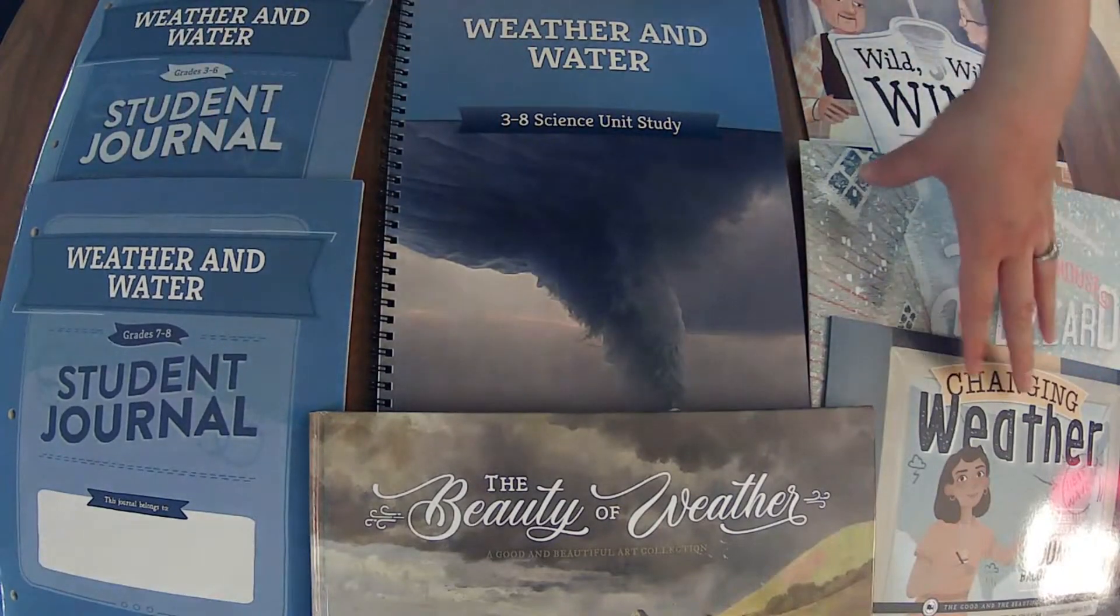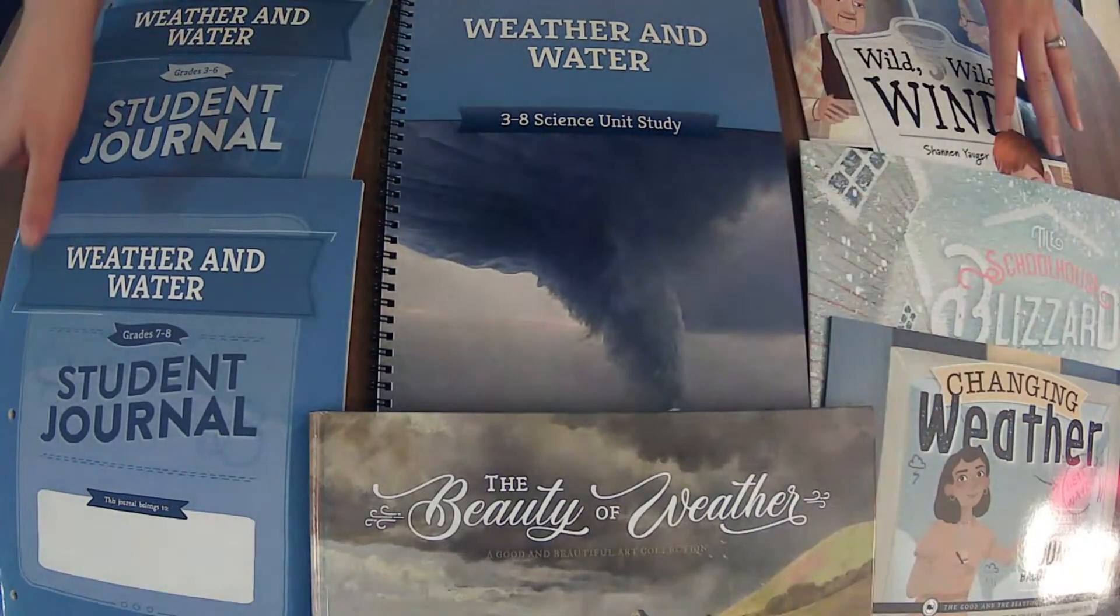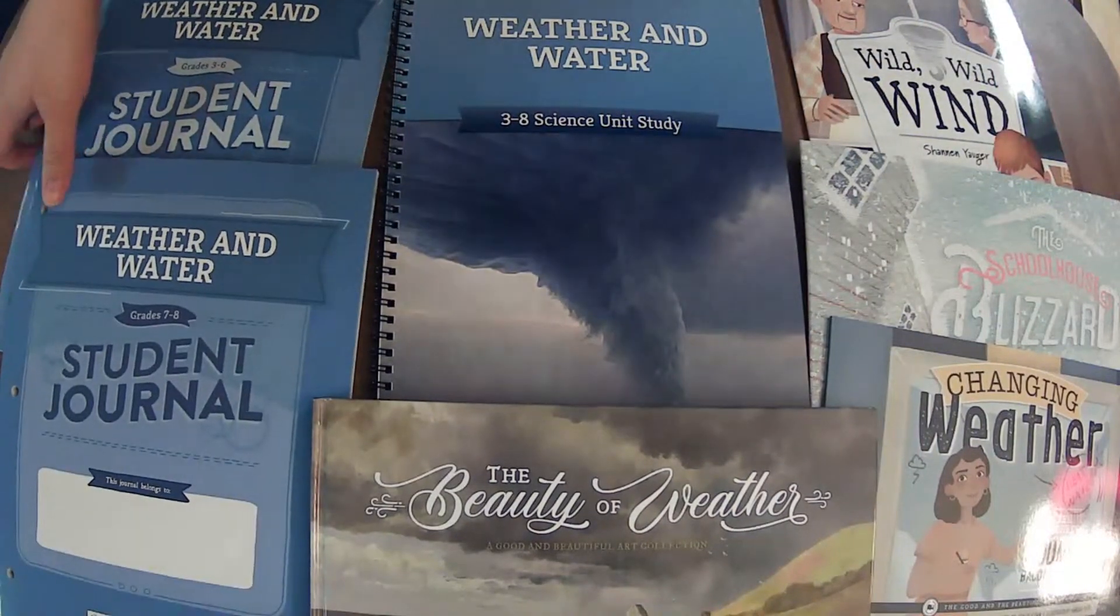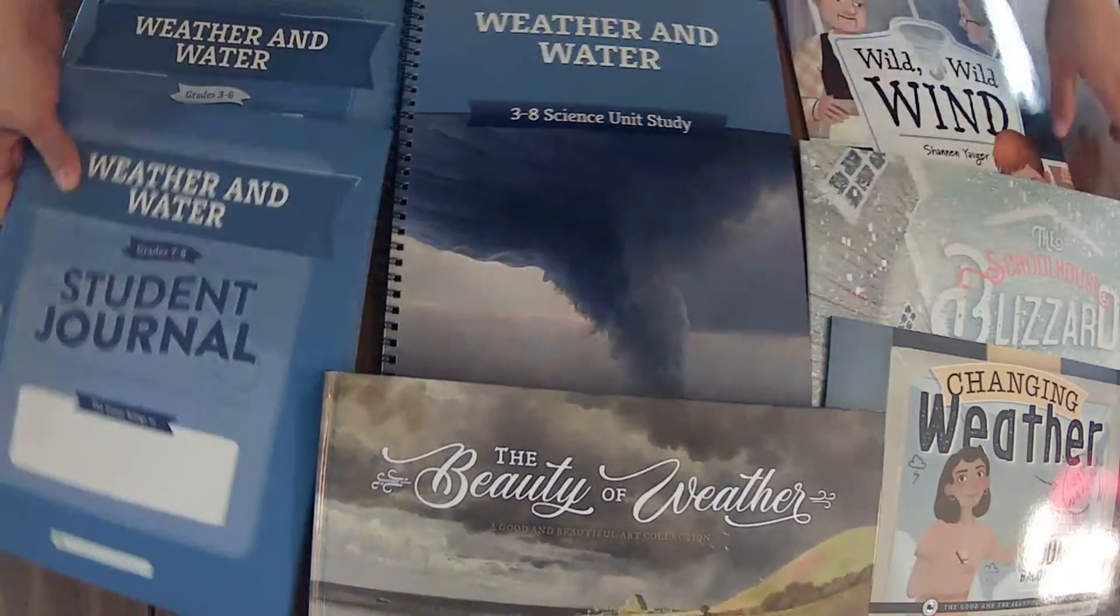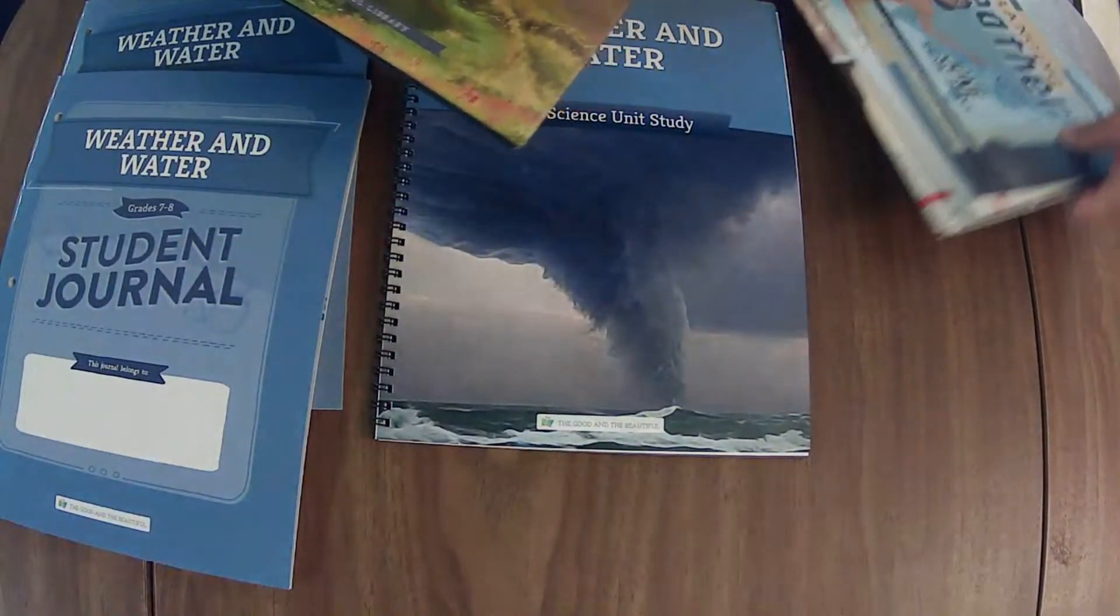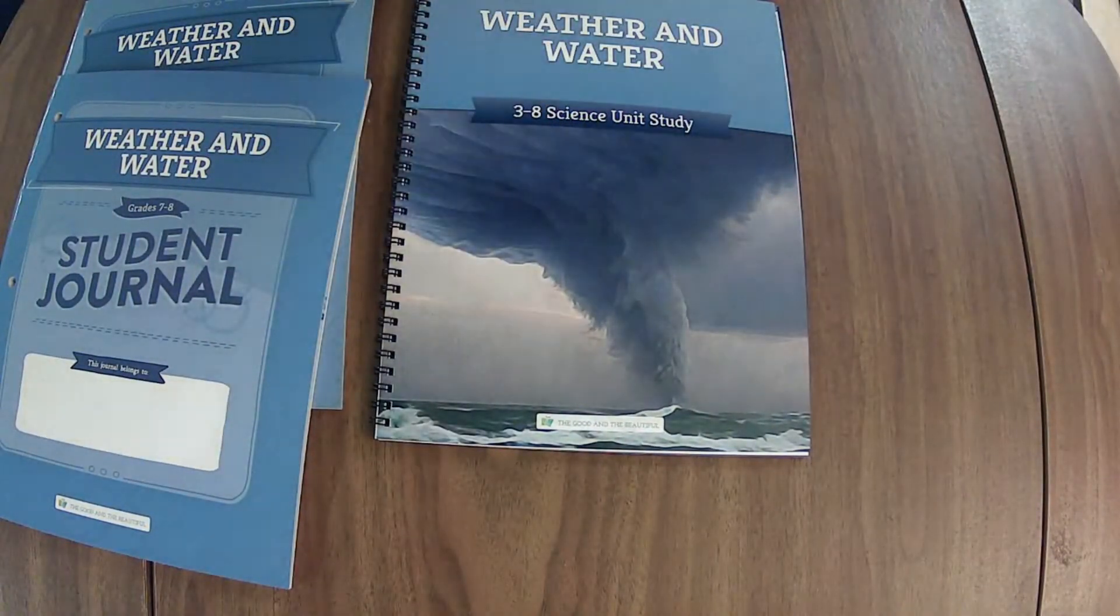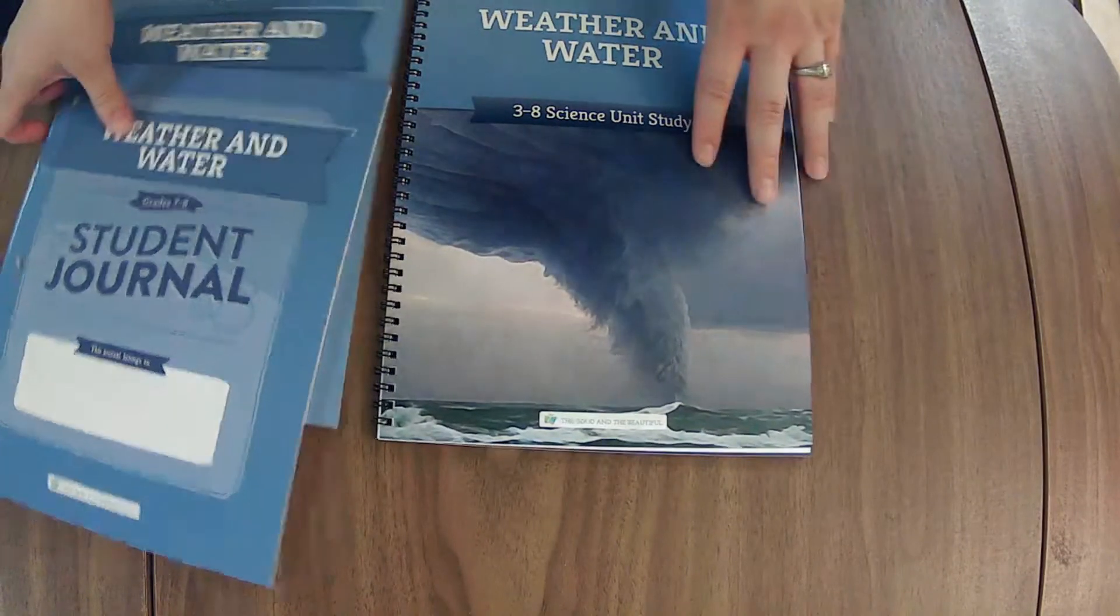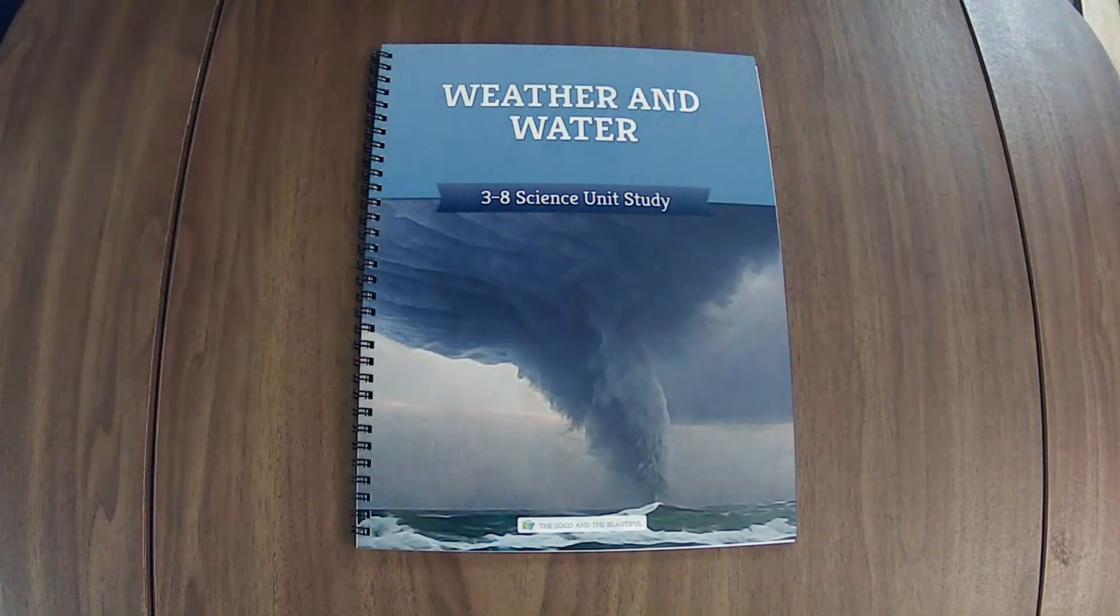This is a science unit that is combining two previous units and we will look through the course book, the journals, student journals, the book pack, and the optional extra reading for the older kiddos. The units that it is combining are the water in our world and the meteorology unit.